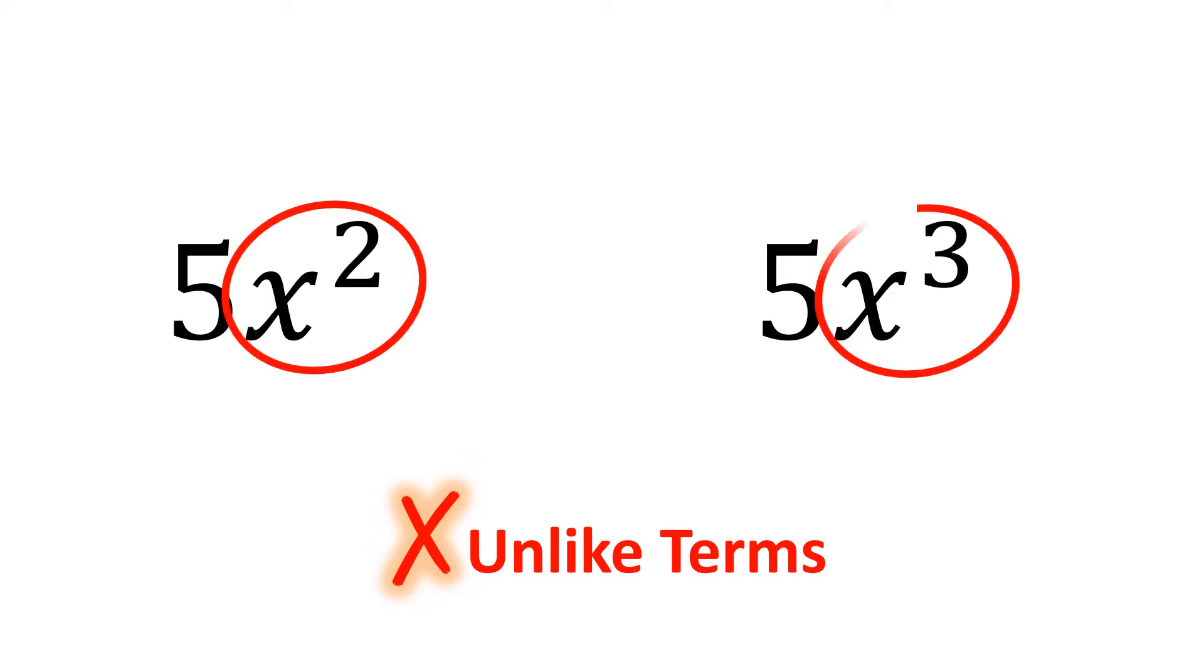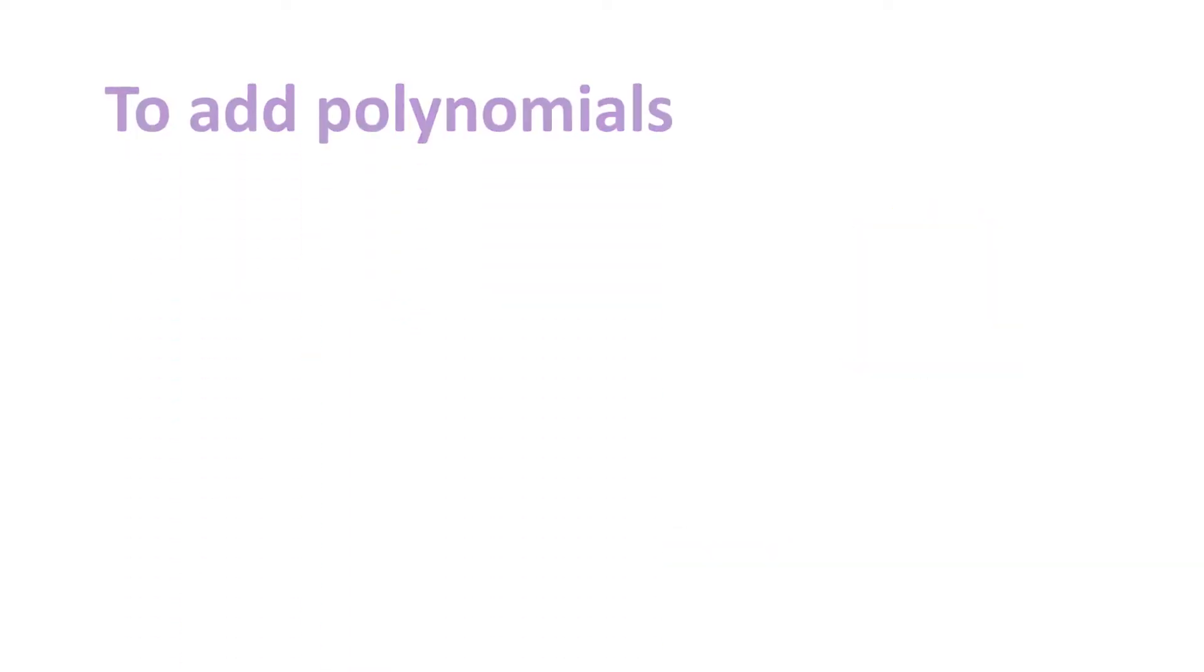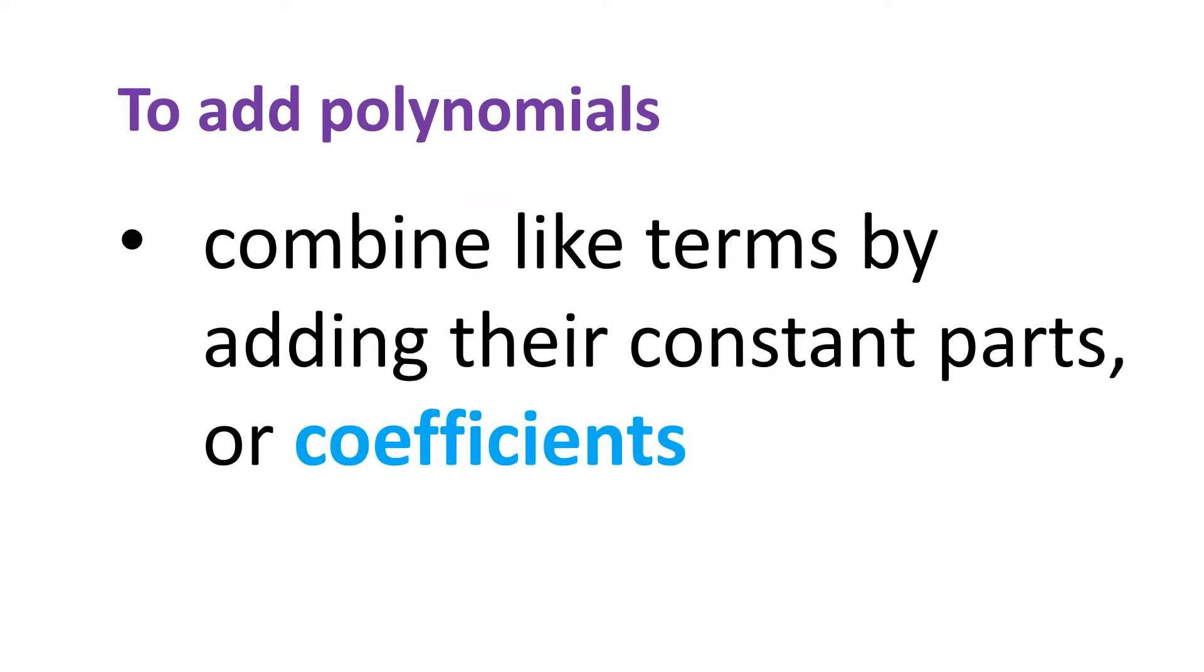Because x squared is not the same as x cubed. Now to add polynomials, we combine like terms by adding their constant parts, also called coefficients.